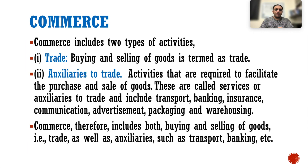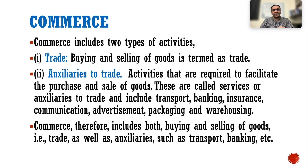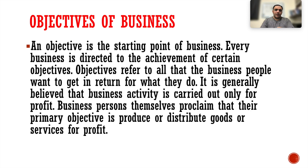Commerce includes two types of activities: trade and auxiliaries to trade. Trade refers to the buying and selling of goods. Auxiliaries to trade are activities required to facilitate the purchase and sale of goods — these include transport, banking, insurance, communication, advertisement, packaging and warehousing. Commerce therefore includes both buying and selling of goods as well as auxiliaries such as transport and banking.